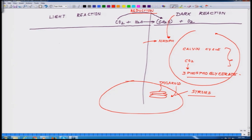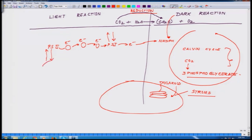The light reaction is happening on the thylakoid membrane where photosystem 2 and photosystem 1 generate electrons. This electron is the driving force for formation of NADPH, and through the electron transport chain, electrons travel from photosystem 2 to photosystem 1 to bring photosystem 1 back to its ground state. Similarly, photosystem 2 is brought back to its ground state by the water splitting cluster.